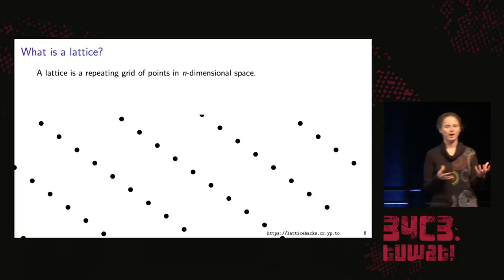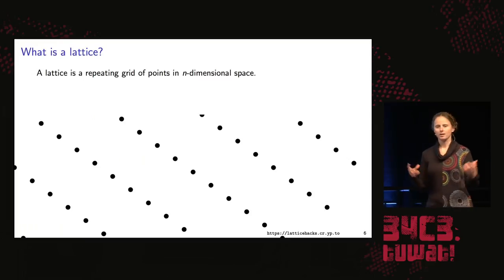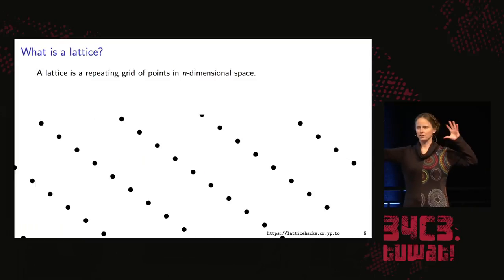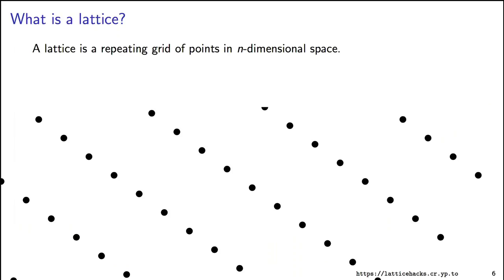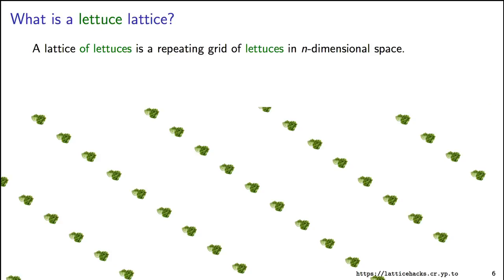For the purposes of this talk, there are actually multiple kinds of lattices in mathematics. The kind we're going to talk about: think of it as a repeating grid of points in n-dimensional space. We have n-dimensional Euclidean space, and think of a repeating grid of points. It looks something like this in two dimensions. You can think of the points as actually representing mathematical things like polynomials. Later on in the talk, we're going to see lattices of polynomials.